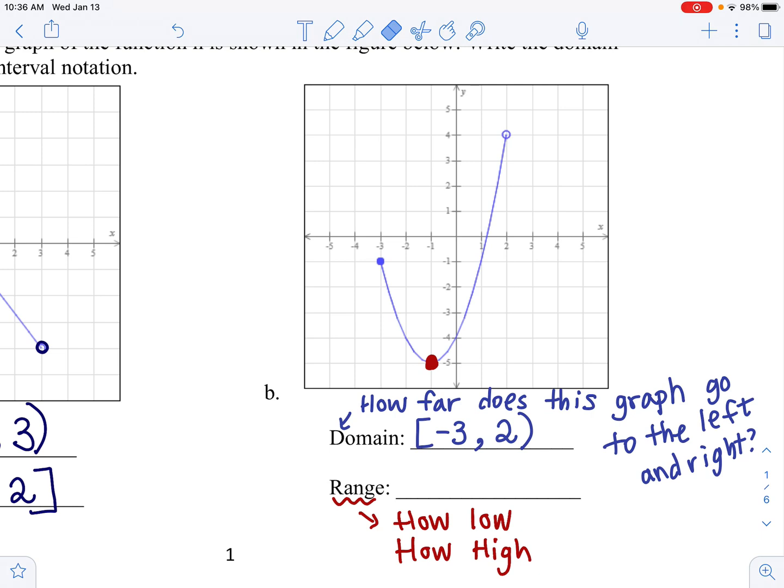But since we are looking at the range, we should be using the y coordinates. So the lowest point of this graph is negative 5, right? Negative 5, but make sure to draw a square bracket in front of negative 5, because we do have a smooth graph over here, which means that we have a filled-in circle or a closed circle here.